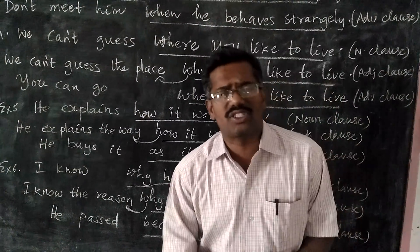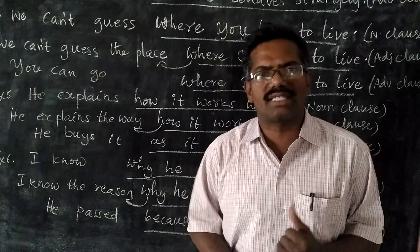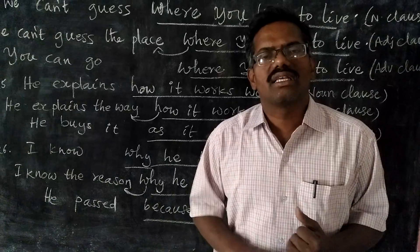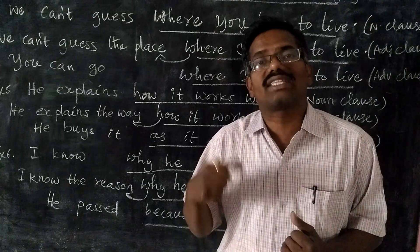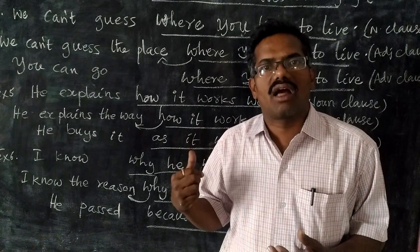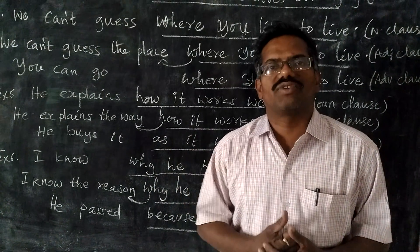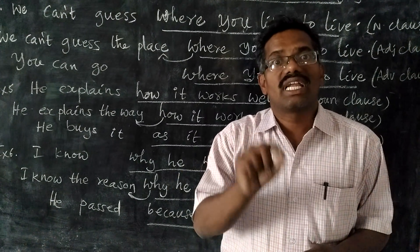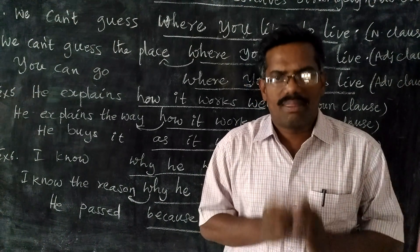Friends, in this way: when a clause answers the question 'what,' it is a noun clause; a clause which has an antecedent before it is an adjective clause; if a clause answers a WH word other than 'what' — when, where, why, how — then the clause is called adverb clause. Friends, if you like this video, please subscribe to my channel by tapping the subscribe button on YouTube. This doesn't cost you anything, but it gives me encouragement. Thank you very much for watching. Namaste.